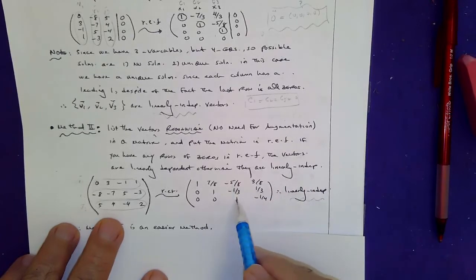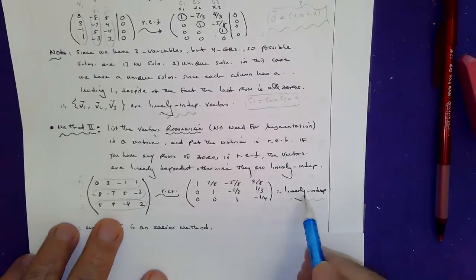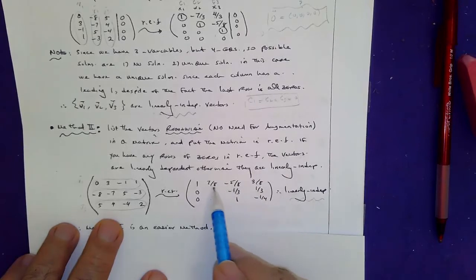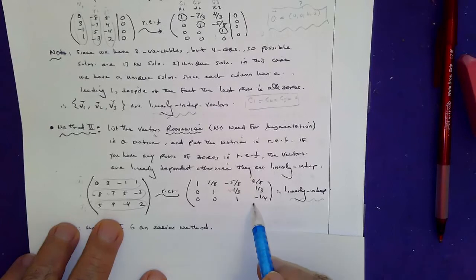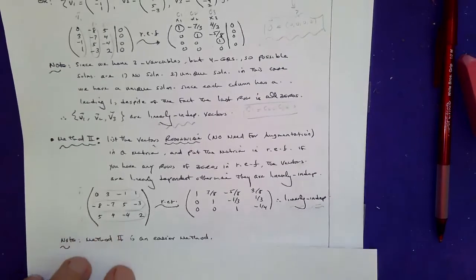If any of these rows happens to be nothing but zeros, then it will be linearly dependent. So in this case, neither of row 1 or row 2 or row 3 is all zeros. So therefore, they are linearly independent.